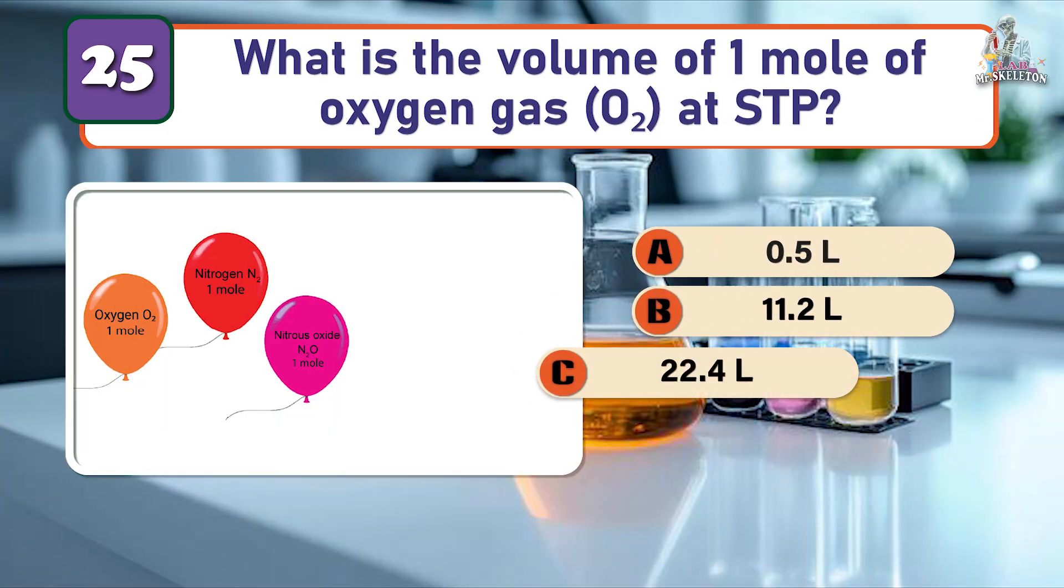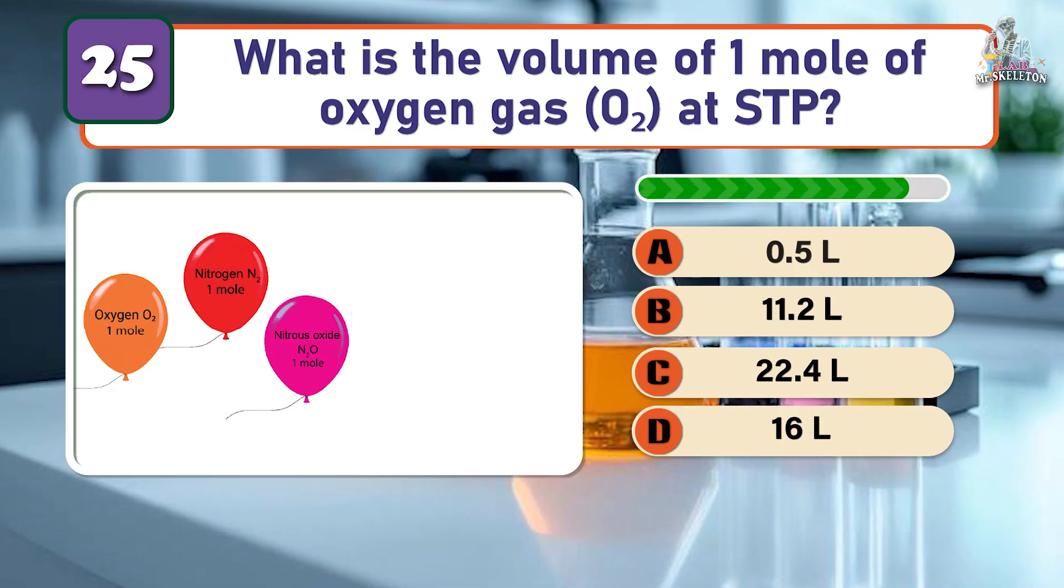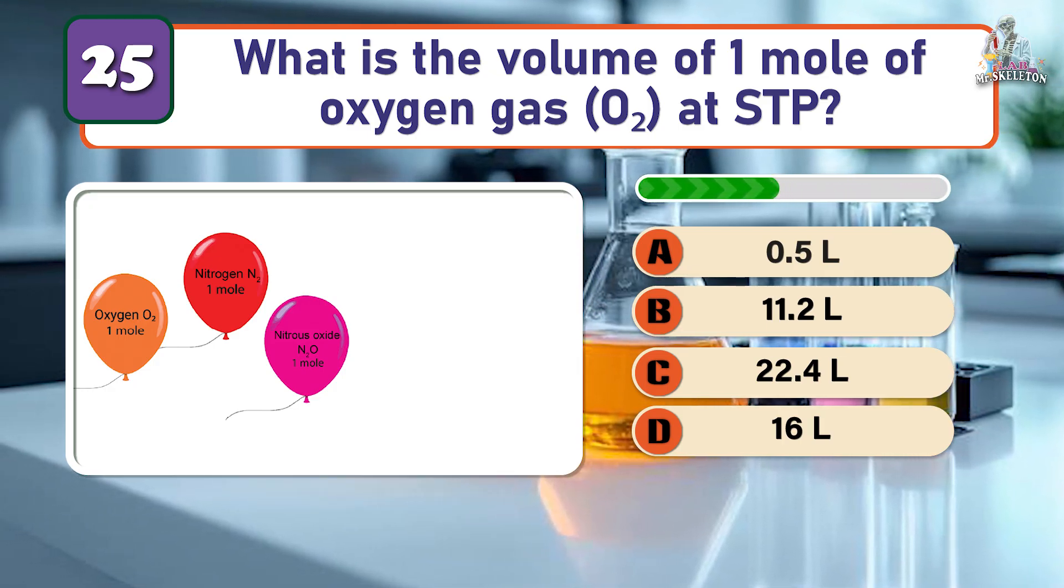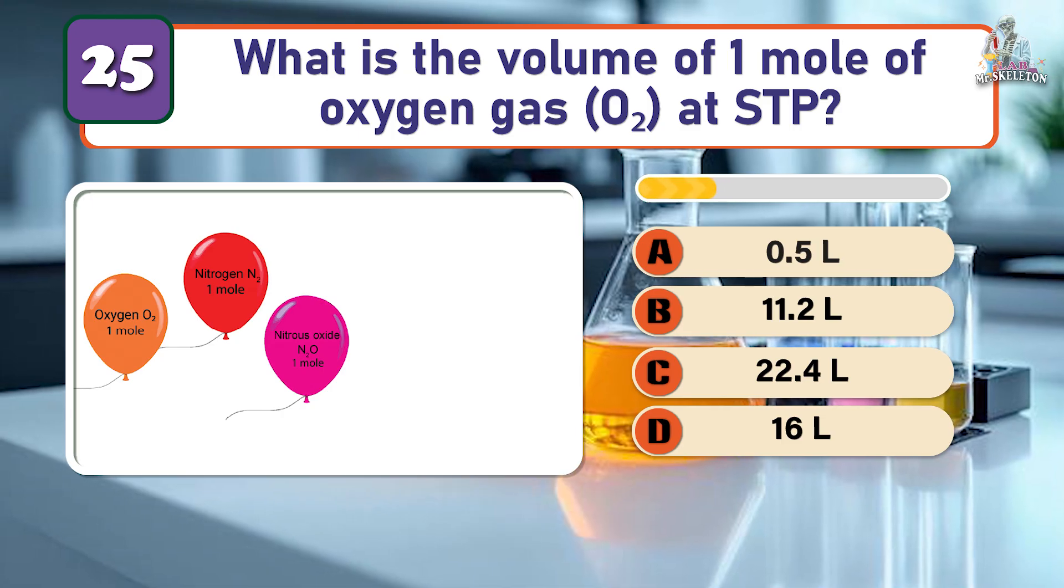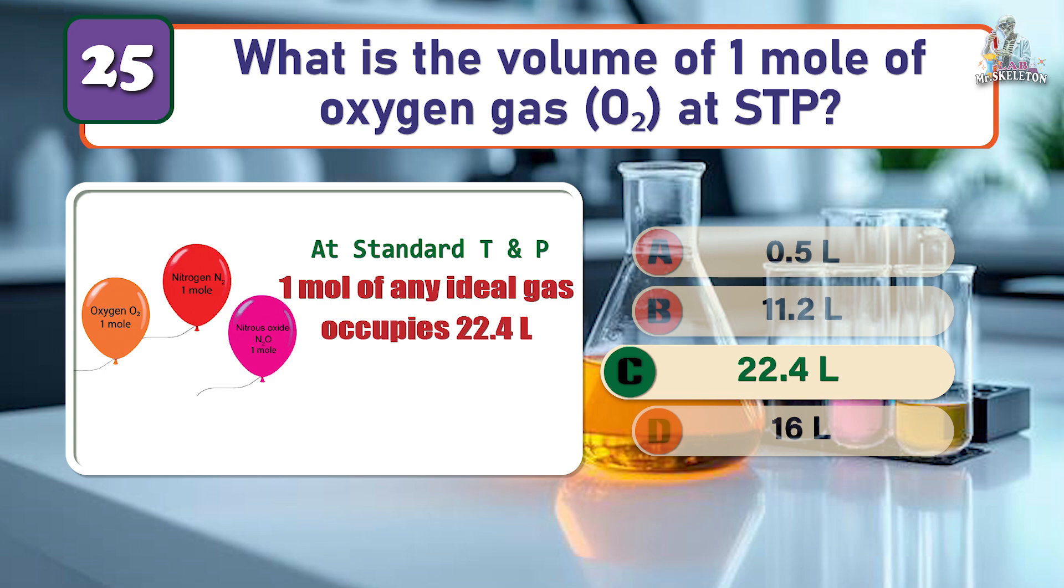What is the volume of one mole of oxygen gas O₂ at STP? The correct answer is 22.4 liters.